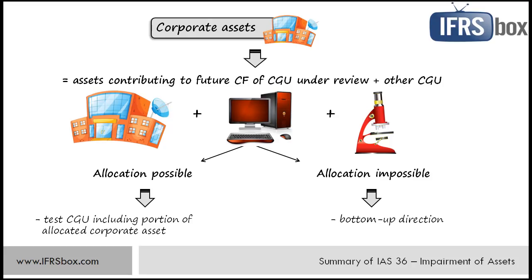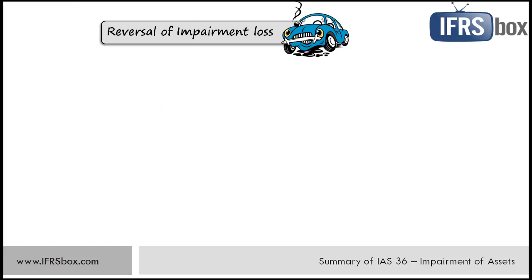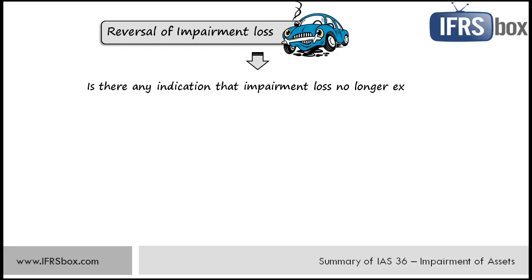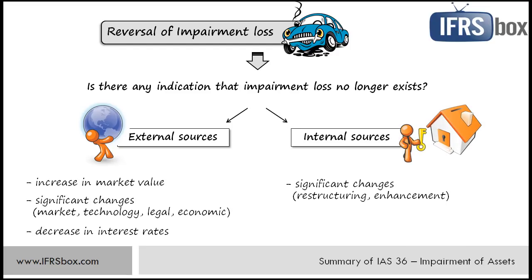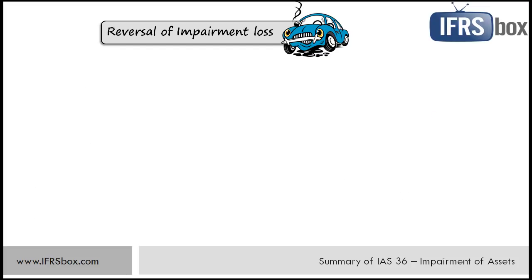The last topic is reversal of impairment loss. When an impairment loss was recognized in previous periods, at the end of the current period an entity must assess whether there is any indication that this loss no longer exists or is smaller. As a minimum, an entity must assess certain indications from internal and external sources — both groups of indicators are the same as when identifying impairment loss, just from the opposite direction. If an entity finds such an indication, it must then assess the need to reverse impairment loss. Only when there is a change in estimates used to determine the asset's recoverable amount can a previously recognized impairment loss be reversed. You cannot reverse an impairment loss due to changes in recoverable amount coming from the passage of time.